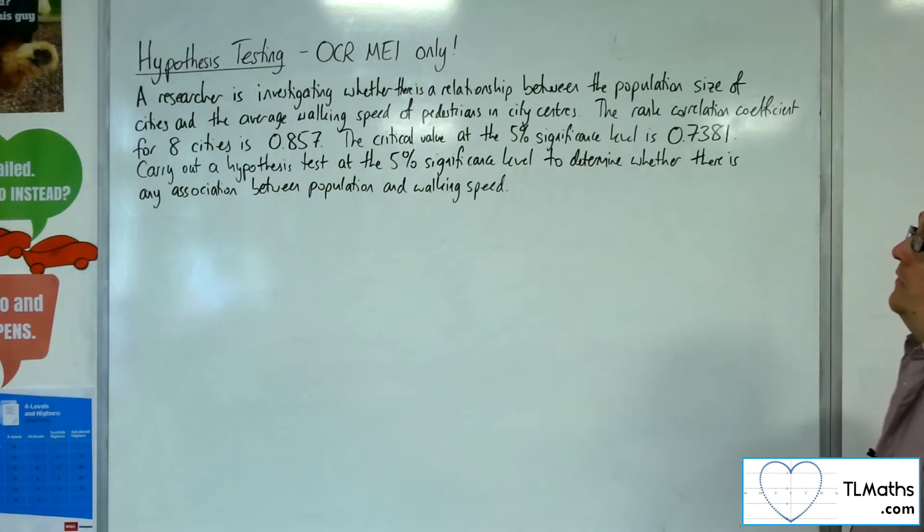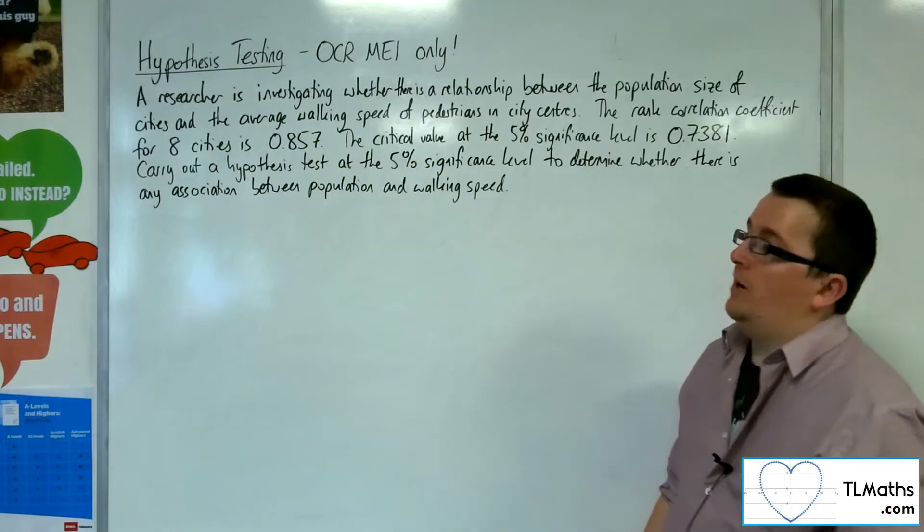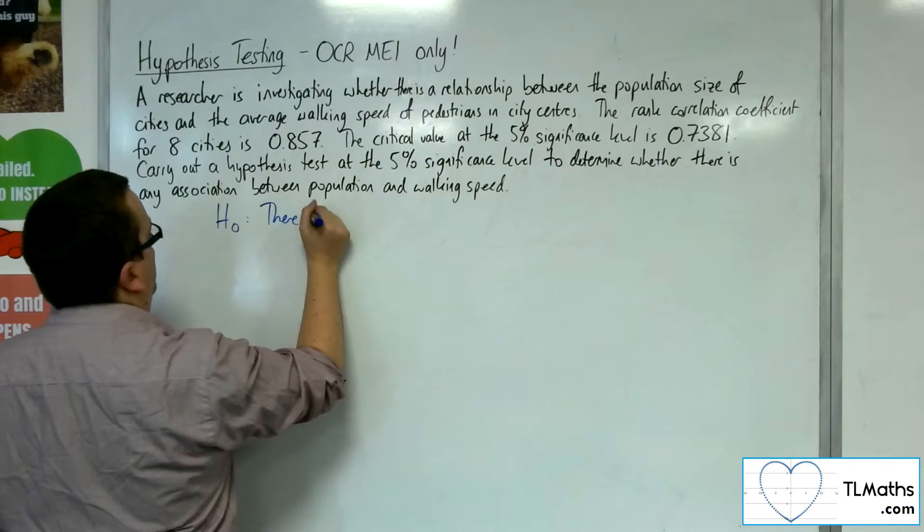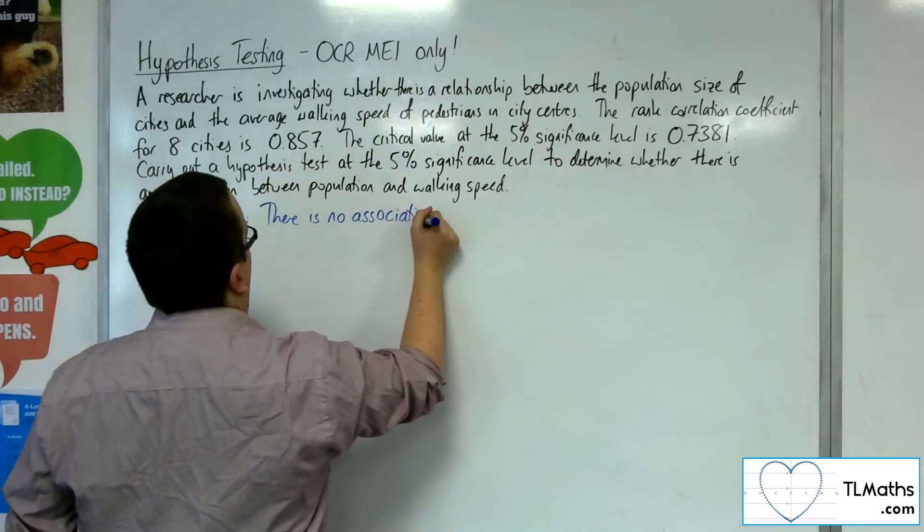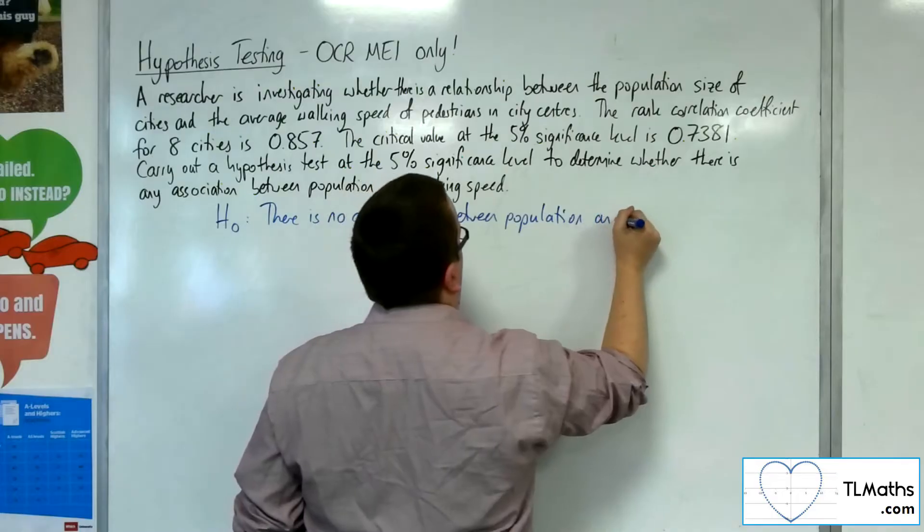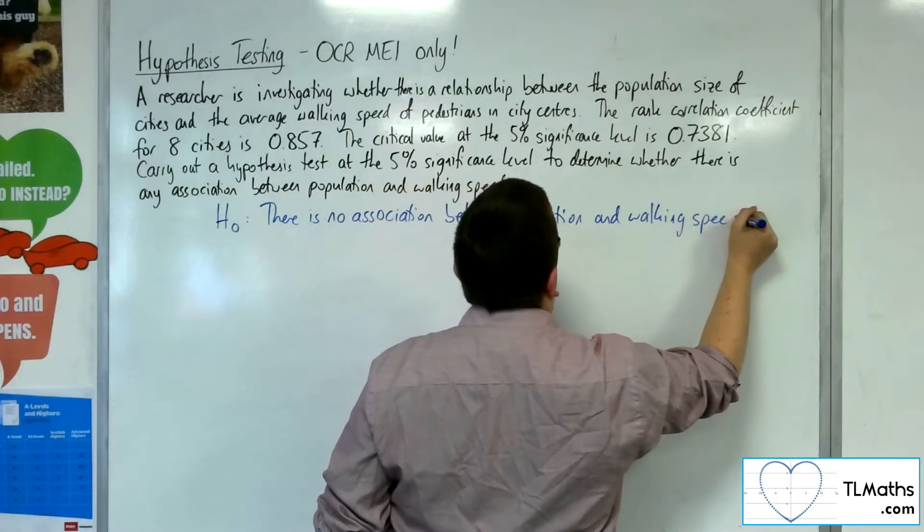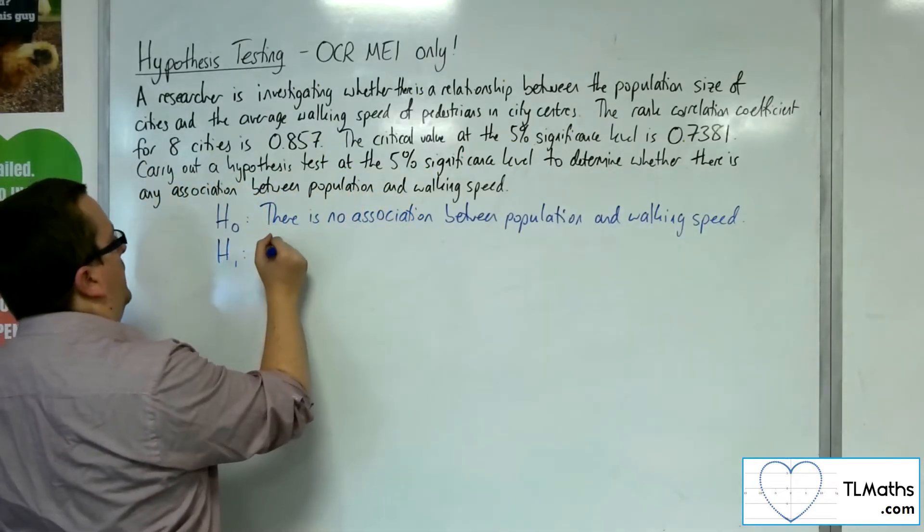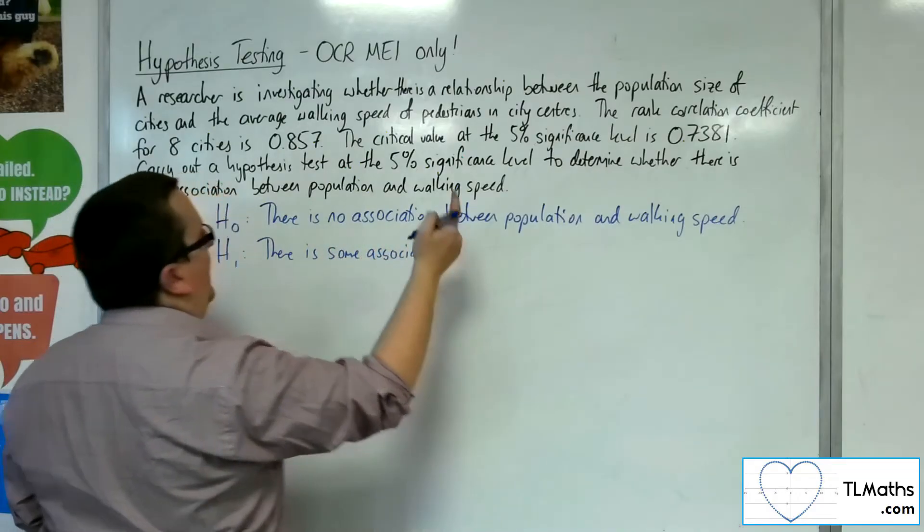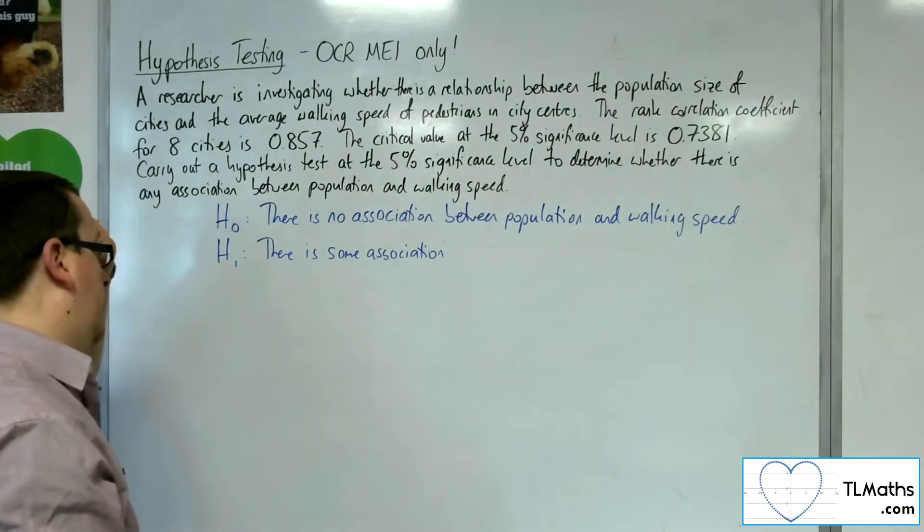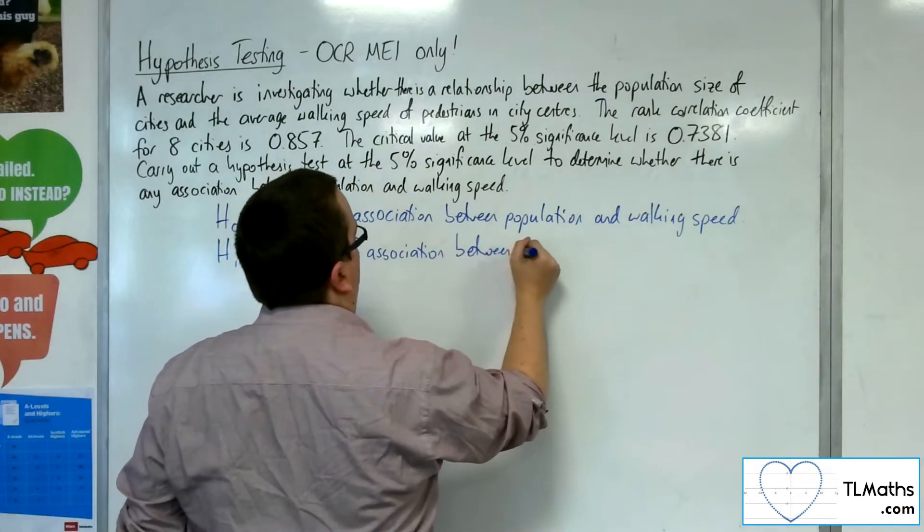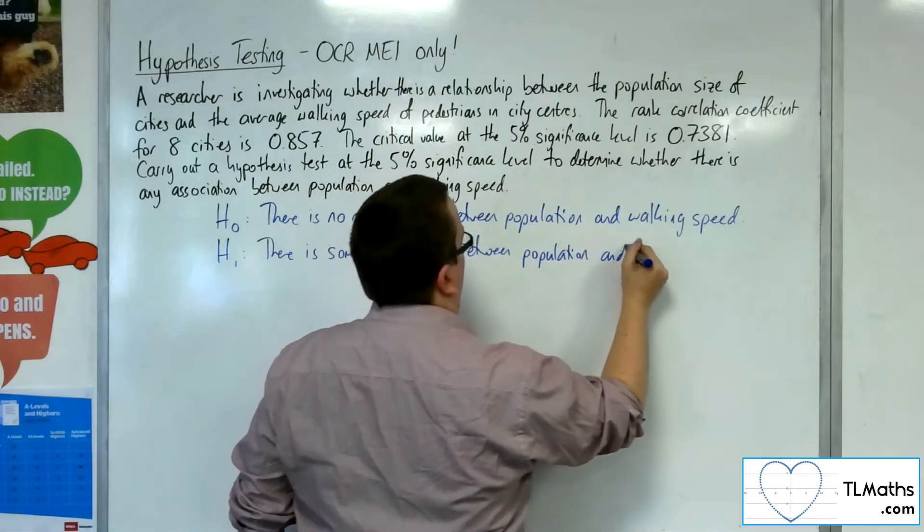Carry out a hypothesis test at the 5% significance level to determine whether there is any association between population and walking speed. H0: there is no association between population and walking speed. H1: there is some association, because we're looking at determining whether there is any association. This is a two-tailed test, so we're looking to see if there is some association—that might be positive or negative—between population and walking speed.